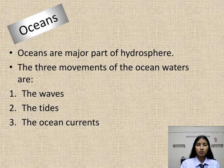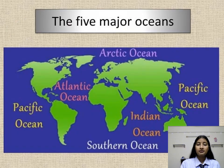There are three movements of ocean water: the waves, the tides, and the ocean currents. There are five major oceans: Arctic Ocean, Pacific Ocean, Indian Ocean, Atlantic Ocean, and Pacific Ocean.